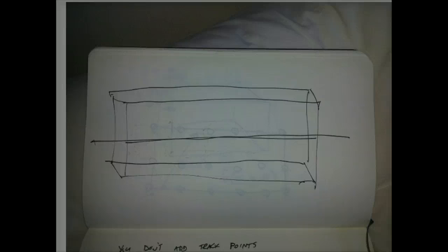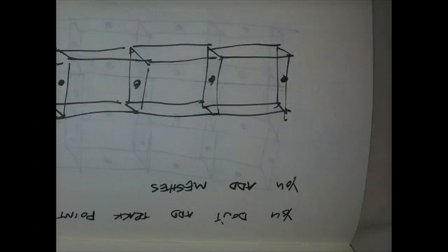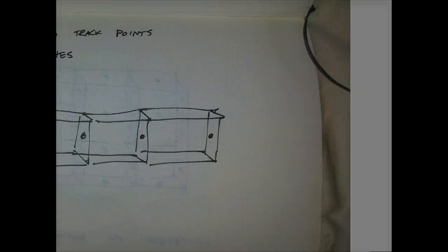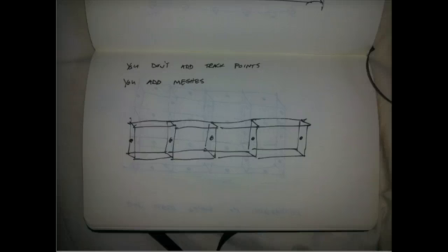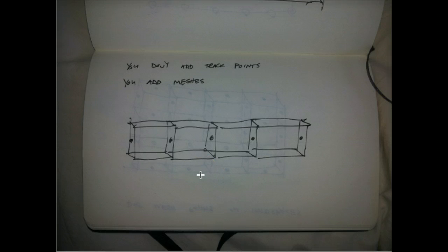This is what we've got so far: we've got this block, and we've just got a single line going through it. You bend the line, and the block bends with it. You don't add track points — you add meshes. I want to change it up. Forget the track points — let's do it with the meshes. Instead of having it all based on track points, why don't we just add a piece of mesh? That's all we're doing — we pull in a piece of mesh, stick it on, then pull in another one and stick it on. That's all our process does.